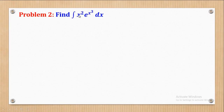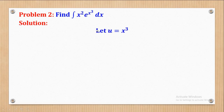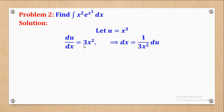Now we go to Problem 2: find the integral of x² multiplied by e^(x³) with respect to x. In this case, I let the power be equal to u, so u = x³. When I differentiate, I get du/dx = 3x², and making dx the subject gives dx = (1/(3x²)) du.